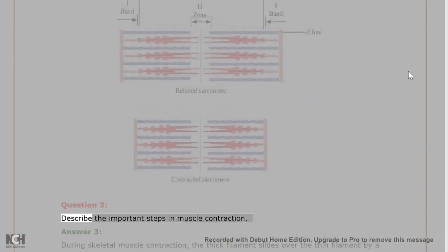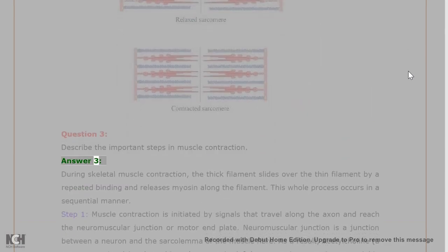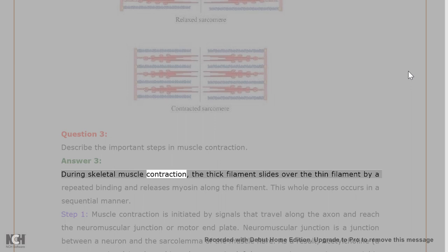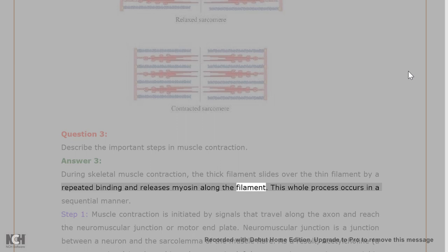Question 3. Describe the important steps in muscle contraction. Answer 3. During skeletal muscle contraction, the thick filament slides over the thin filament by repeated binding and releases myosin along the filament. This whole process occurs in a sequential manner.